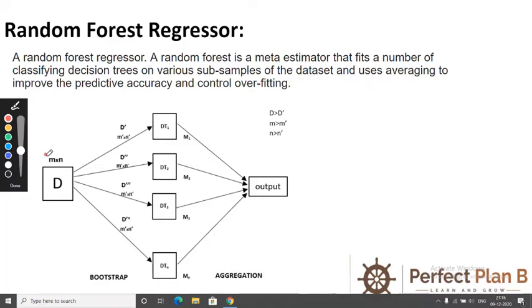You can see there is a dataset with m rows and n features. So we are distributing it using different values of rows and columns. You can see d dash, d double dash, m dash, n dash. We are using different samples and then we are using it to train our decision trees.